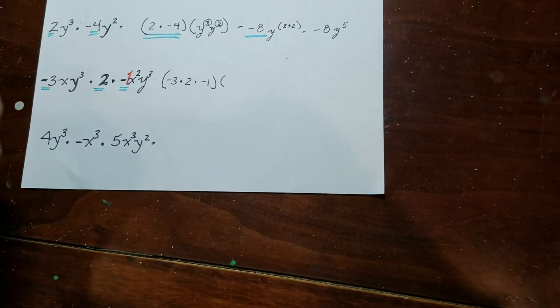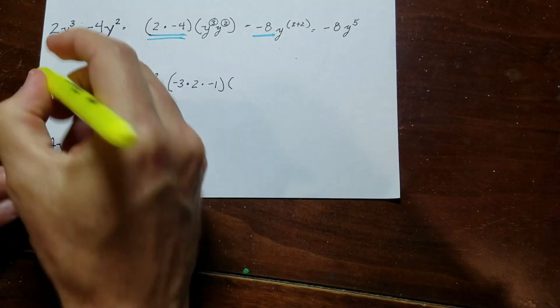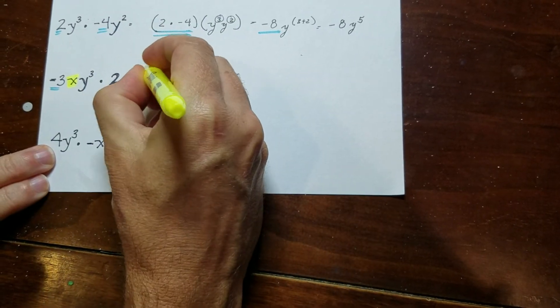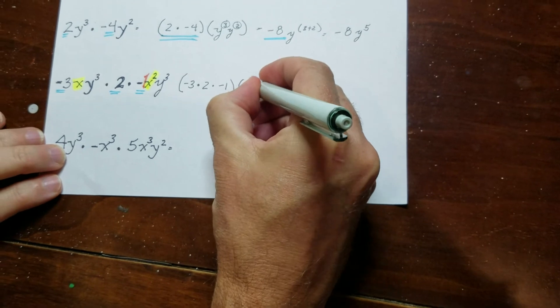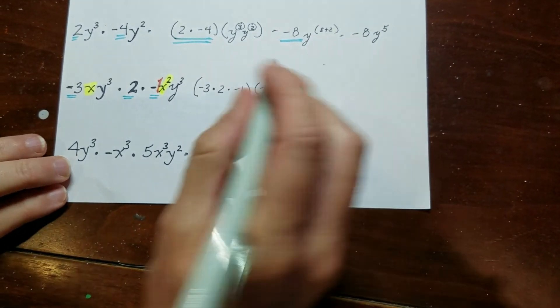Now, the x's, I've got one x right here. So I'll kind of color these. So I've got an x right here. And it looks like there's an x to the 2 right there. So I'm going to go ahead and put those together. That's another group.